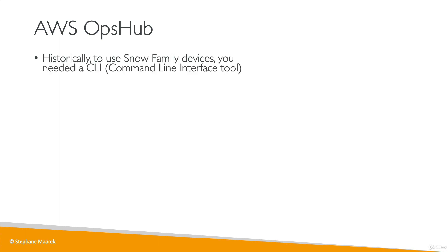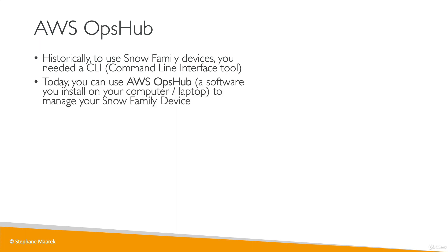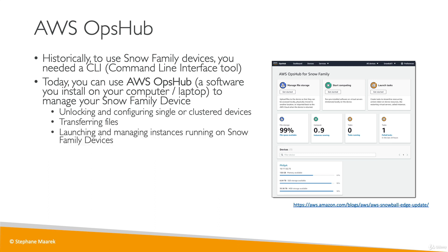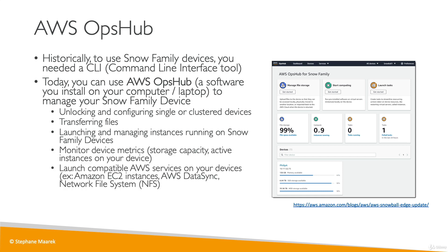AWS OpsHub is a software you install on your computer or laptop — not something you use on the cloud. Once connected, it gives you a graphical interface to connect to your Snow devices, configure them, and use them. OpsHub allows you to unlock and configure single or clustered devices, transfer files, launch and manage EC2 instances running on Snow Family devices, monitor device metrics, and launch compatible AWS services such as EC2 instances, DataSync, or a network file system.